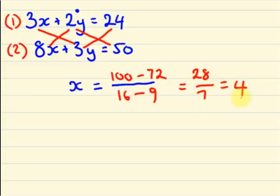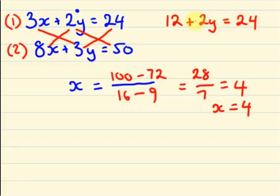I am going to substitute my x value into my first equation. x equals 4 — I am writing it once again so it will be easier to understand. 3 into 4 is 12, plus 2y equals 24. So 2y equals 24 minus 12, which is 12. Then y equals 12 divided by 2, which is 6. So my x equals 4 and my y equals 6.